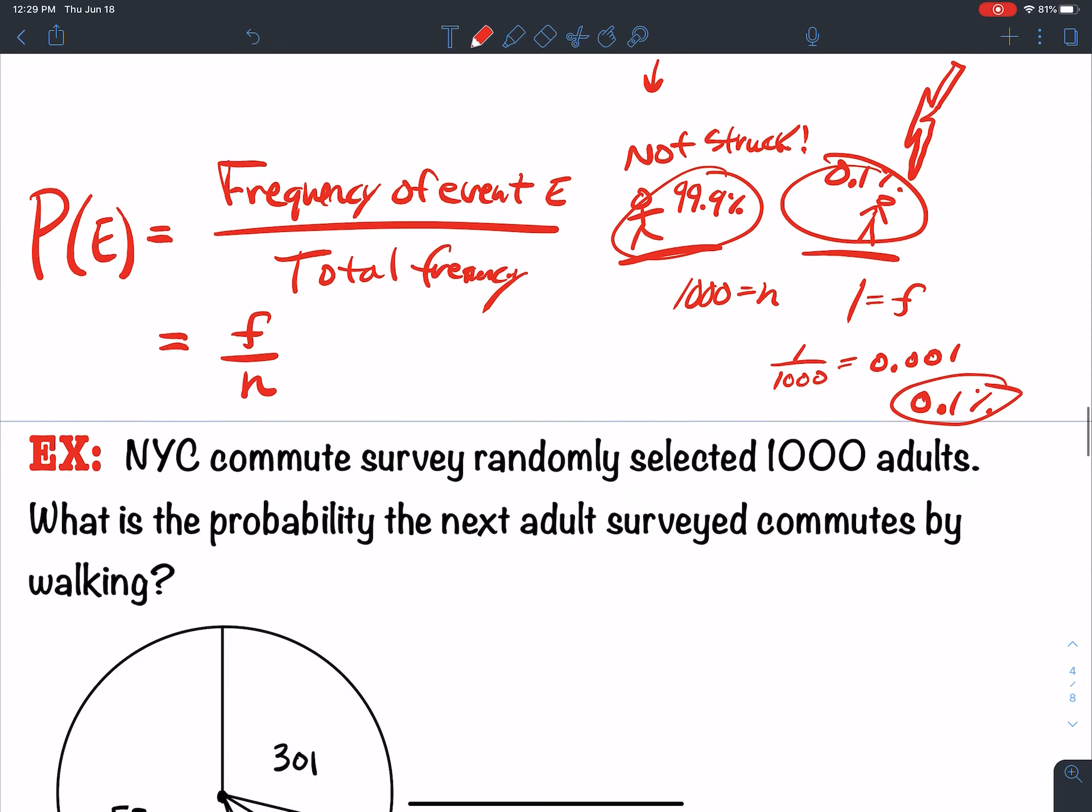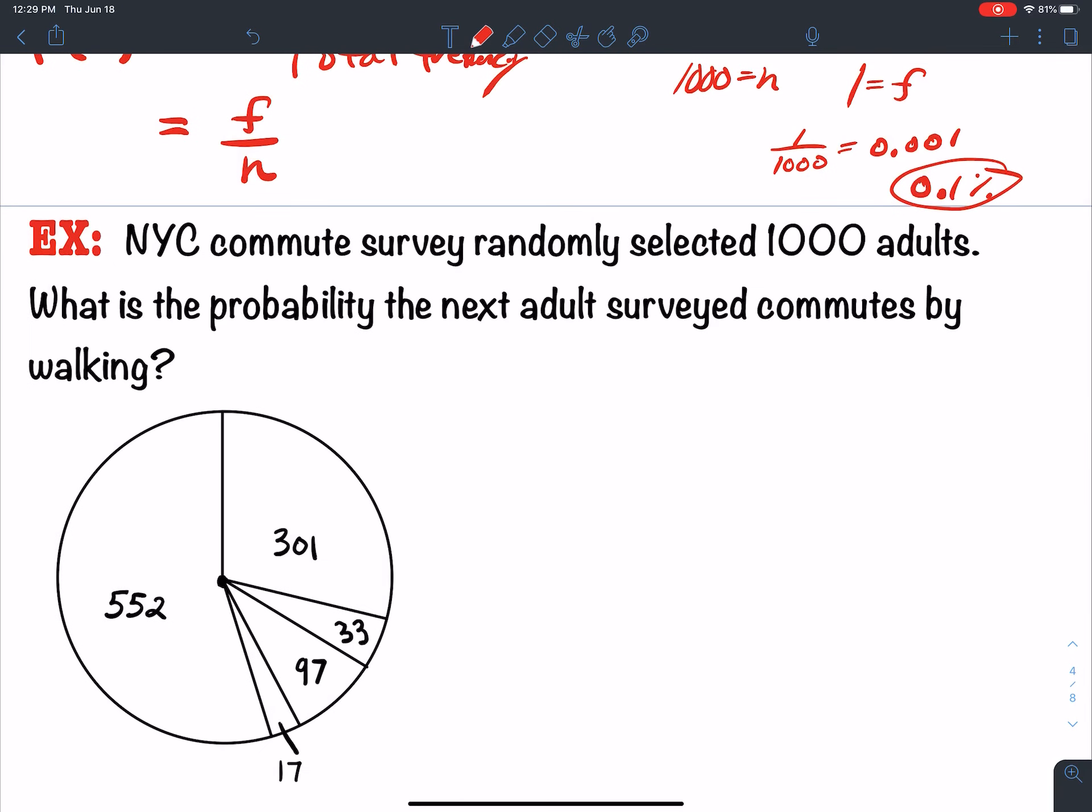So let's do an example here. New York City Commute Survey randomly selects a thousand adults. And we want to know what the probability that the next person we run into, what's the probability that they commute by walking? So 552 do public transportation. 301 have a private car. 333 use a taxi. 97 are walkers. And 17 ride a bike.